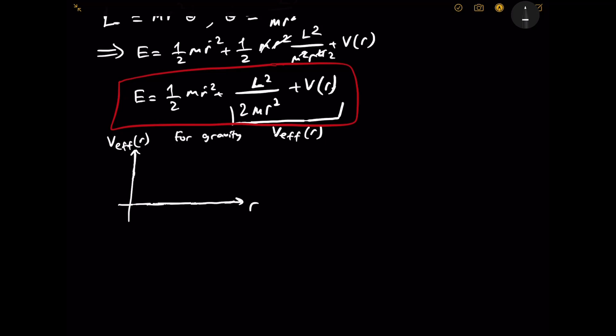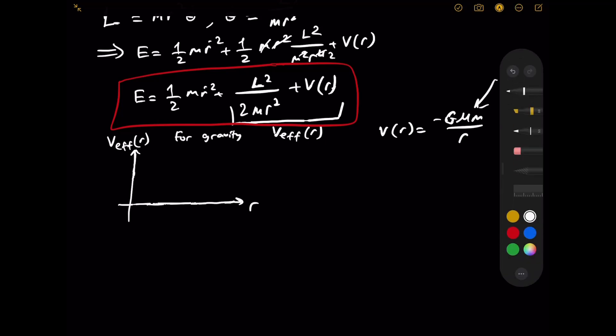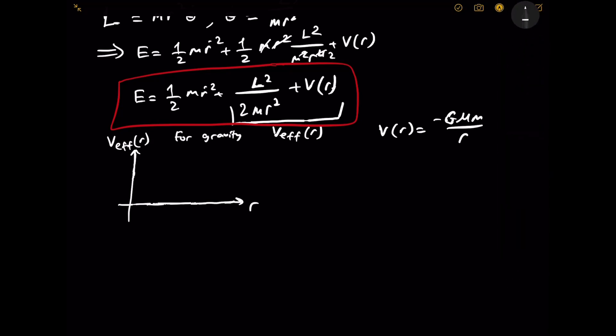So you can already see - let's graph it for gravity. Let's be specific. For gravity, V(r), the initial potential, will be negative GMm over r. And by the way, I have a video in which I prove this formula. You can access that video from the cards right now and also from the description. You don't need to take this for granted. In this case, V effective is basically a one over r squared term and a one over r term.